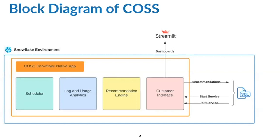The recommendation engine model is responsible for generating performance optimization recommendations from the summaries built by the logs and users analytics model. These recommendations include: what is the right size of the warehouse for the workload, what is the utilization of current warehouses, what needs to be done to reduce Snowflake credit consumption, and what needs to be done to improve the performance of the workload — including what performance optimization method should be used, considering cost and performance benefits.